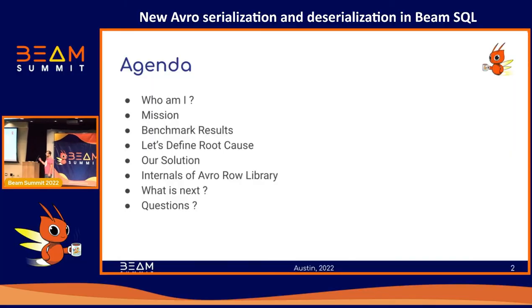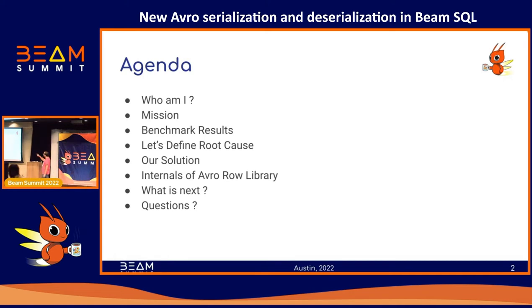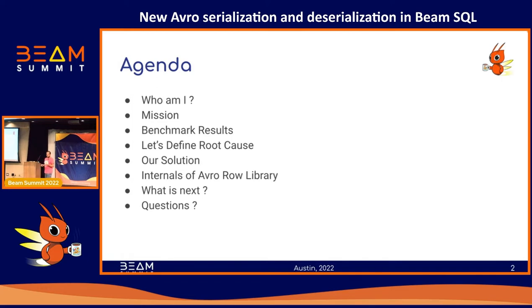The agenda is straightforward: who am I, then mission, benchmark results, and we will find together what is the root cause with Avro and Row. Row means the Beam Row type. Then I will introduce my solution, share the benchmarks, and a little bit about what I did internally and how I did those things.